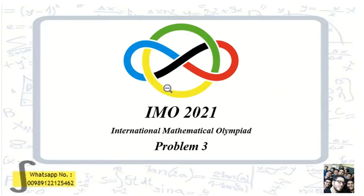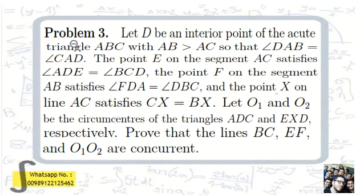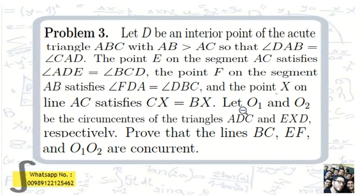IMO 2021 Problem 3. Let D be an interior point of acute triangle ABC with AB greater than AC, such that angle DAB equals angle CAD. The point E on segment AC satisfies angle ADE equals angle BCD. The point F on segment AB satisfies angle FDA equals angle DBC. The point X on line AC satisfies CX equals BX. Let O1 and O2 be the circumcenters of triangles ADC and EXD respectively. Prove that lines BC, EF, and O1O2 are concurrent.